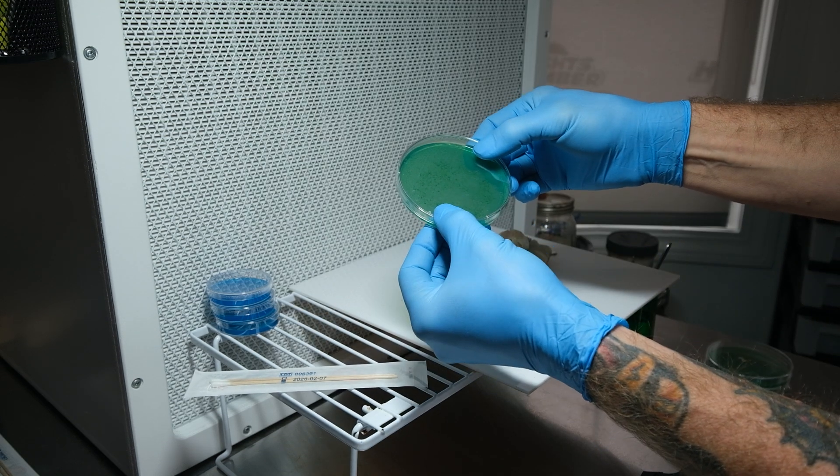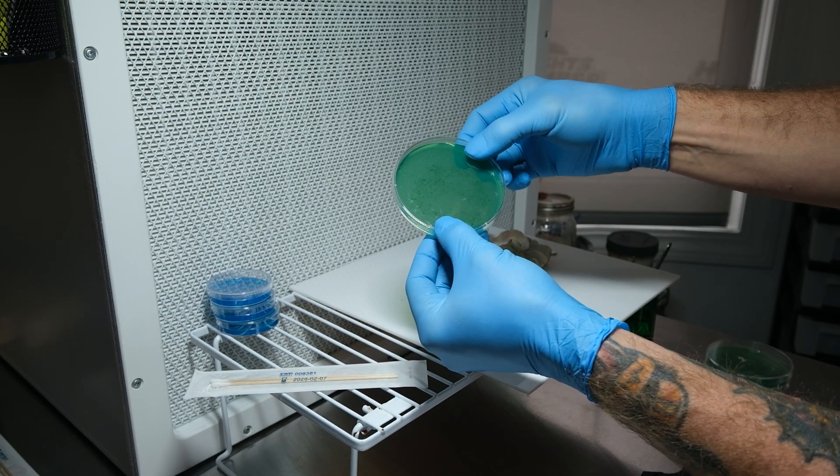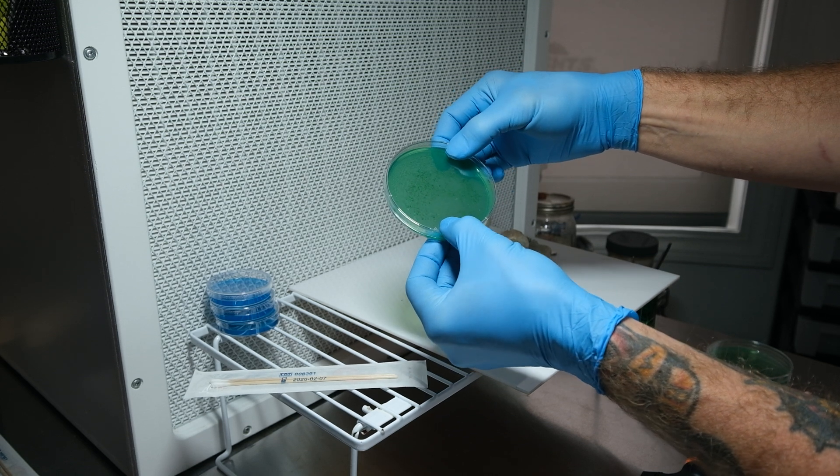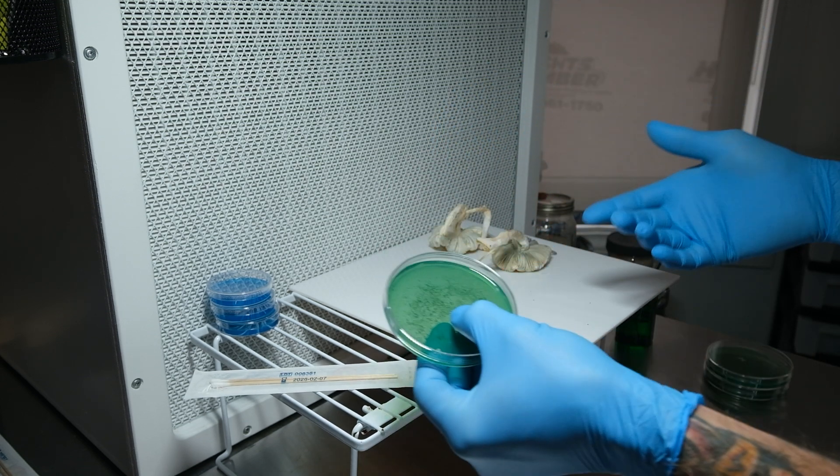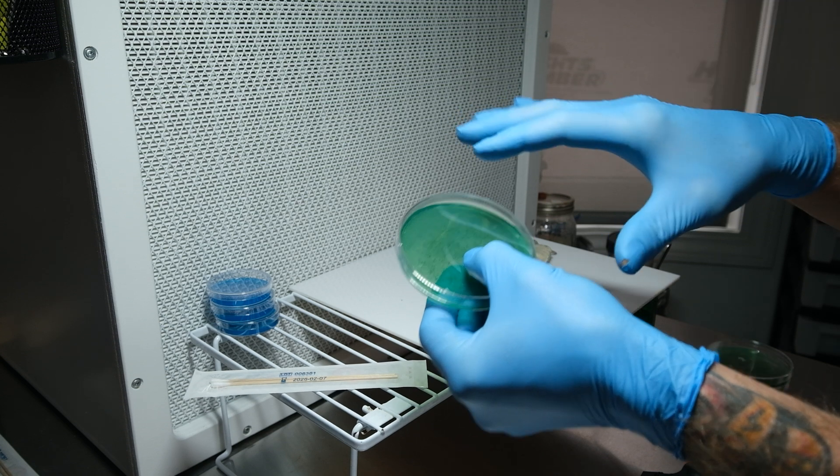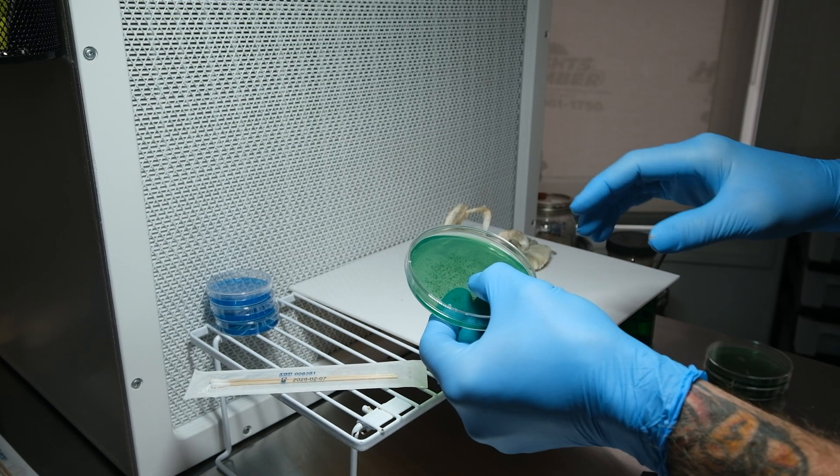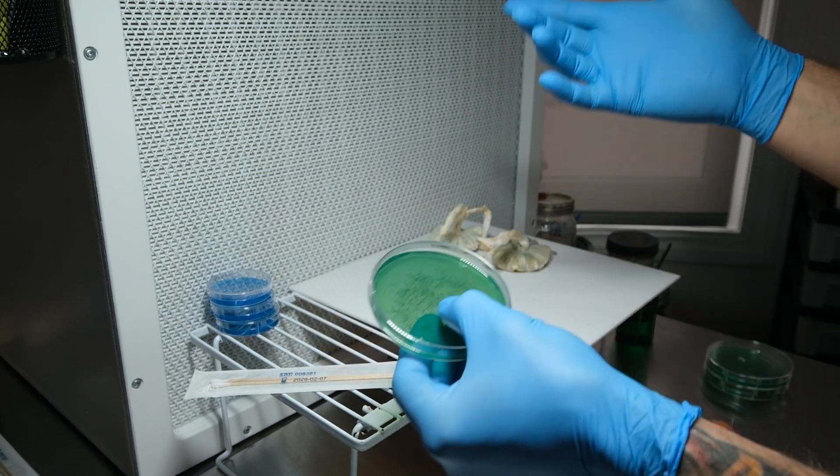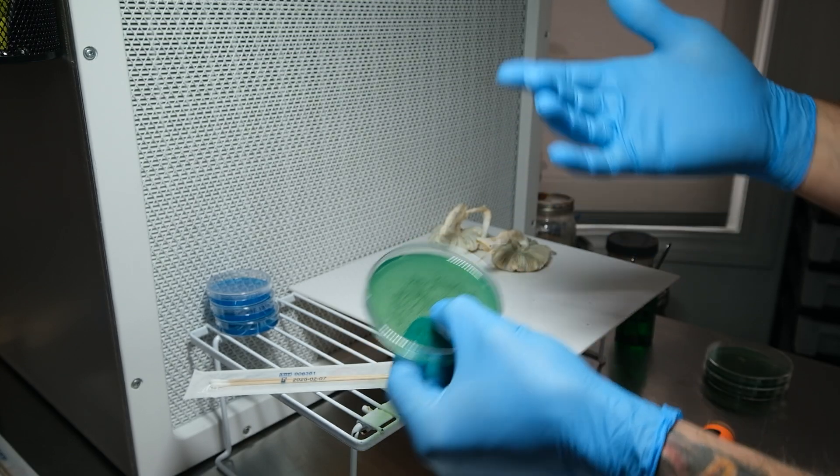And that's how you streak the plate. I don't know if you can see it in that light, but that's the way I like to do my multi-spore plates. Make sure that I get a lot of spores over a lot of area and then you'll see the pairs germinate.